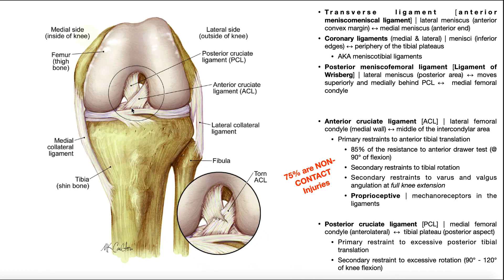When we look at the PCL, it's going to do the exact opposite. Up here is its origin — the anterolateral surface of the medial femoral condyle. As it runs down toward the tibia, this one goes laterally and posteriorly, whereas the ACL went anteriorly and medially. Notice it crosses behind the ACL — thus the name cruciate, which actually means cross. It then inserts down here on the tibia at the posterior aspect of the tibial plateau.